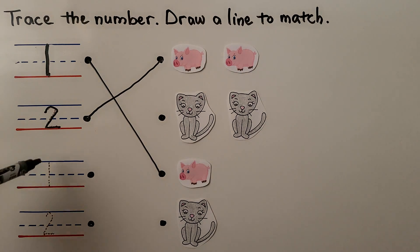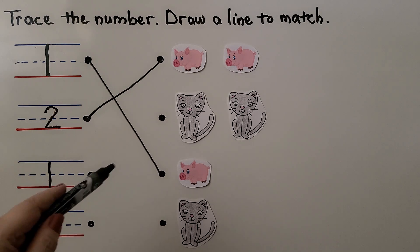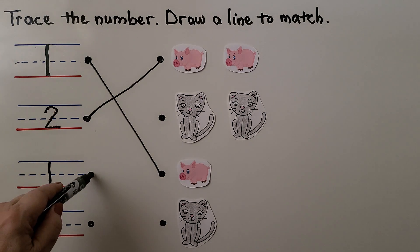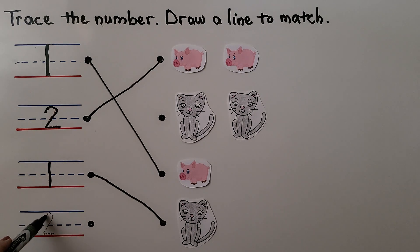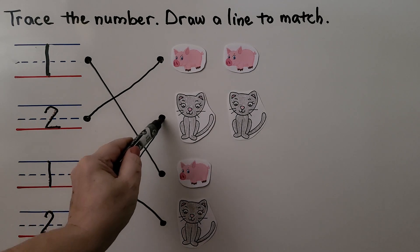Here we have number 1 again. We start at the top and go straight down. Do you see one animal we could draw from this dot to the other side? Here's one cat. We can draw a line to match the number 1 to one cat. Here we have a 2 again. We curve around, trace it on a slant, and then go off to the side. Now we need to connect it to two animals — we still have the two cats, and we can draw a line and connect it like that.